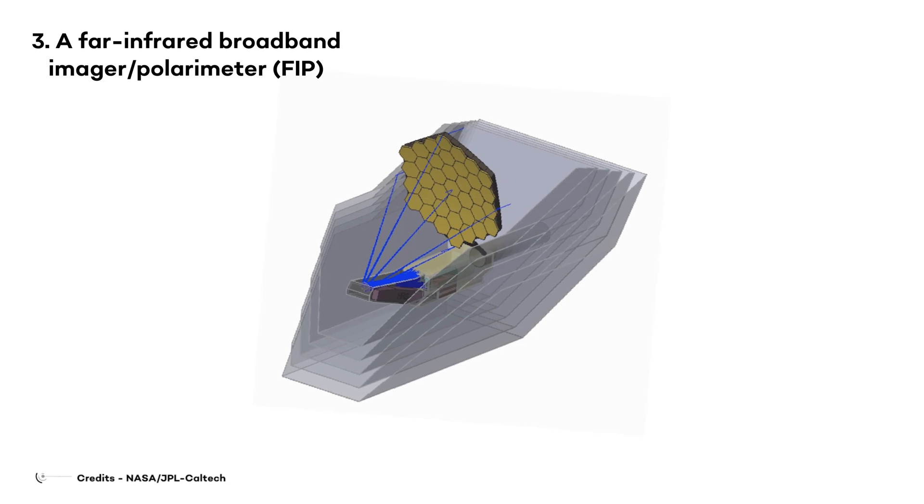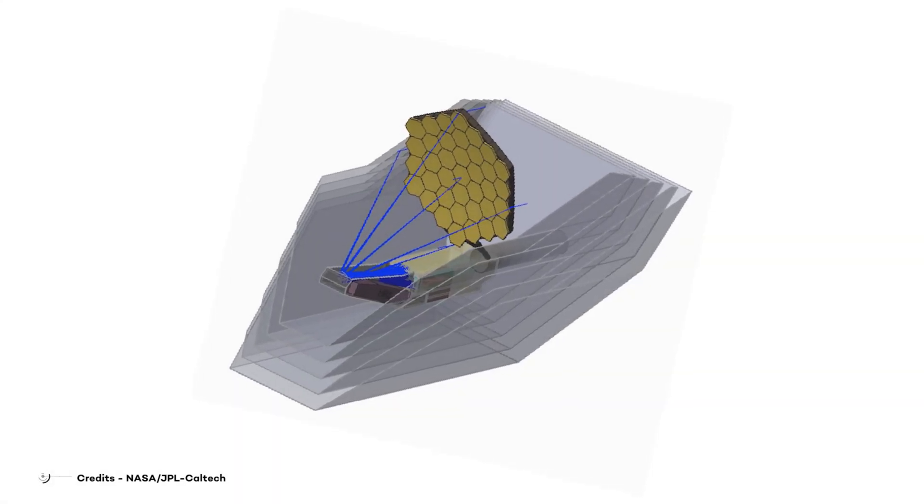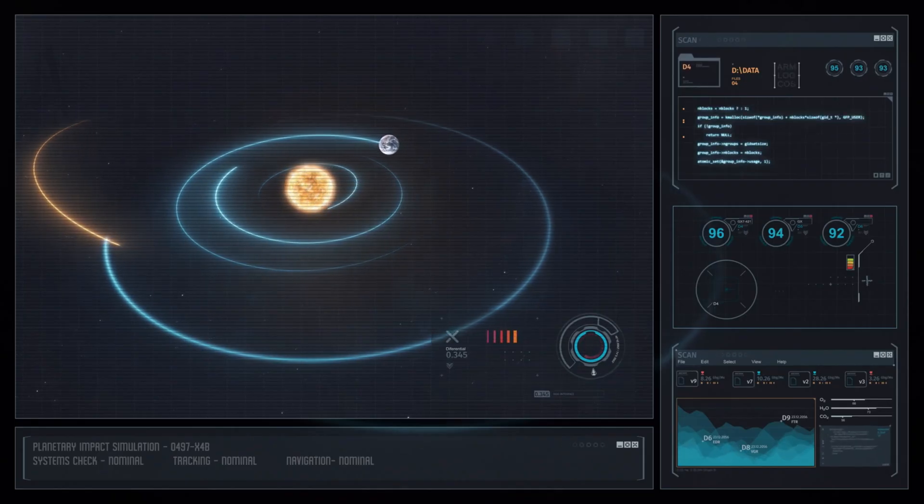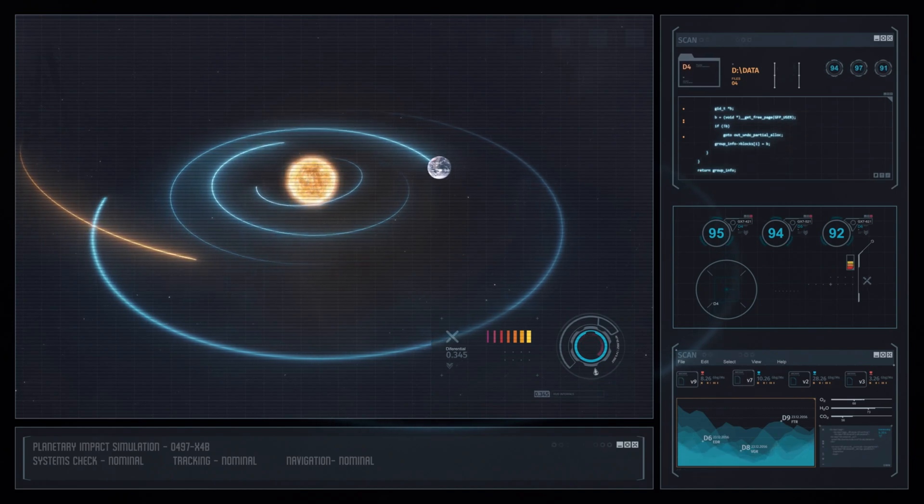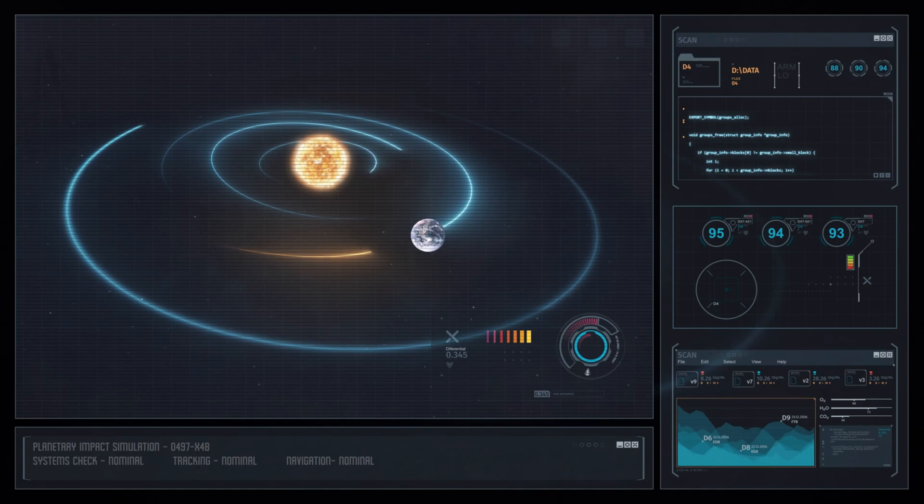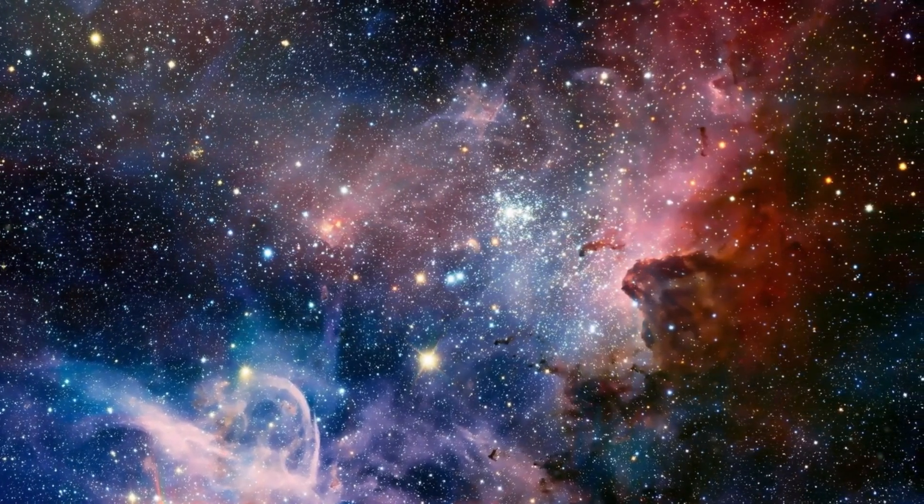A far-infrared broadband imager polarimeter FIP operating in two bands. The FIP will be able to measure thousands of square degrees with broadband images at 50 and 250 micrometers, which will help it probe large areas of space in a very short time.